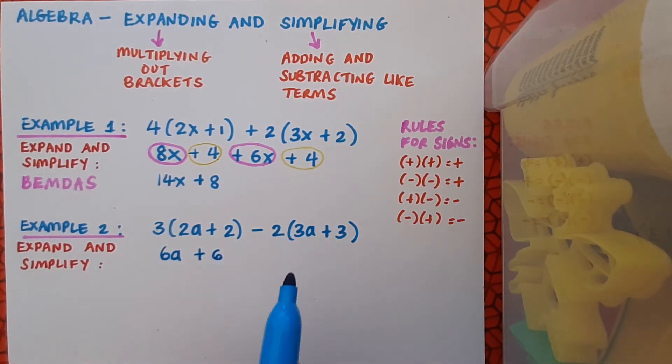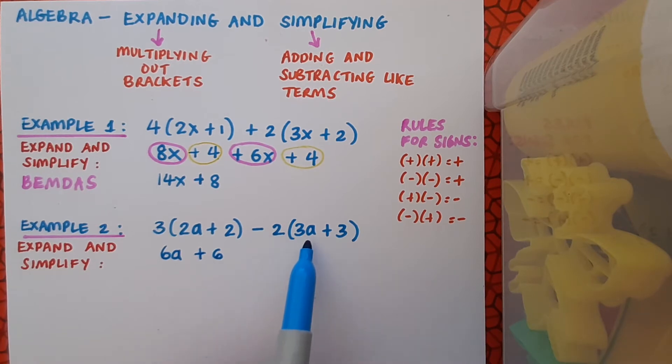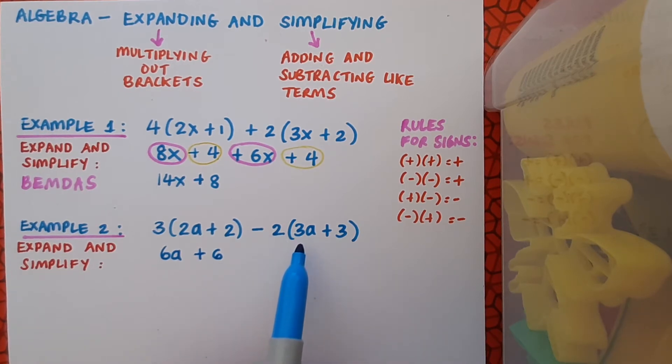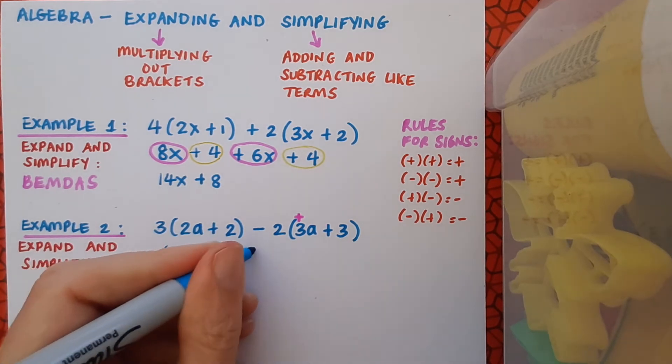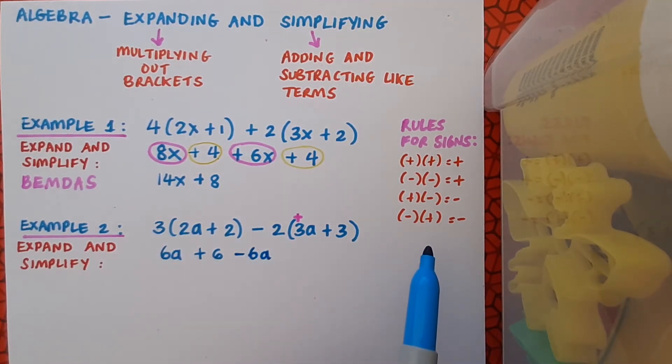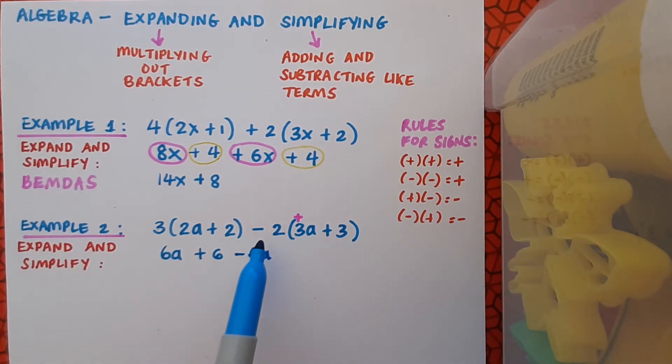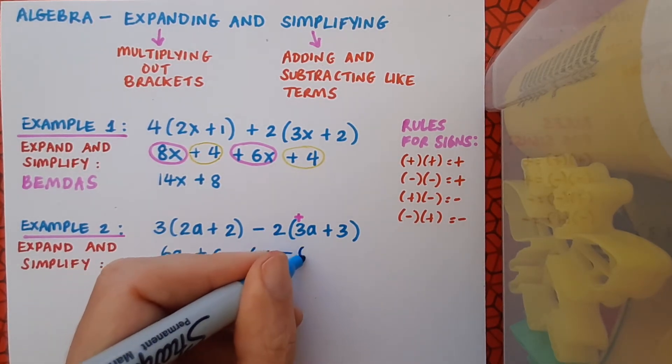Moving over to my second bracket, I've got negative 2 by 3a. Now, this 3a is a positive 3a. I haven't just decided that on a whim. If I ever have a term that has no sign in front of it, it's automatically a plus. So negative by positive is going to give me negative, so I'm going to have minus 6a. And negative 2 times plus 3, negative by a positive gives a negative. So that's going to be minus 6.